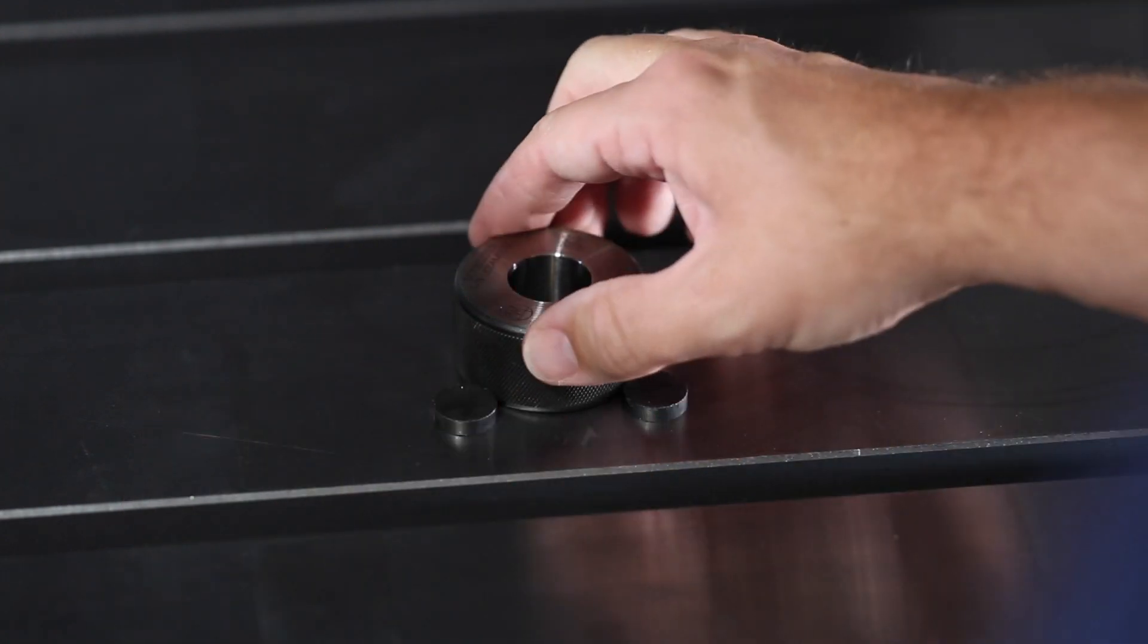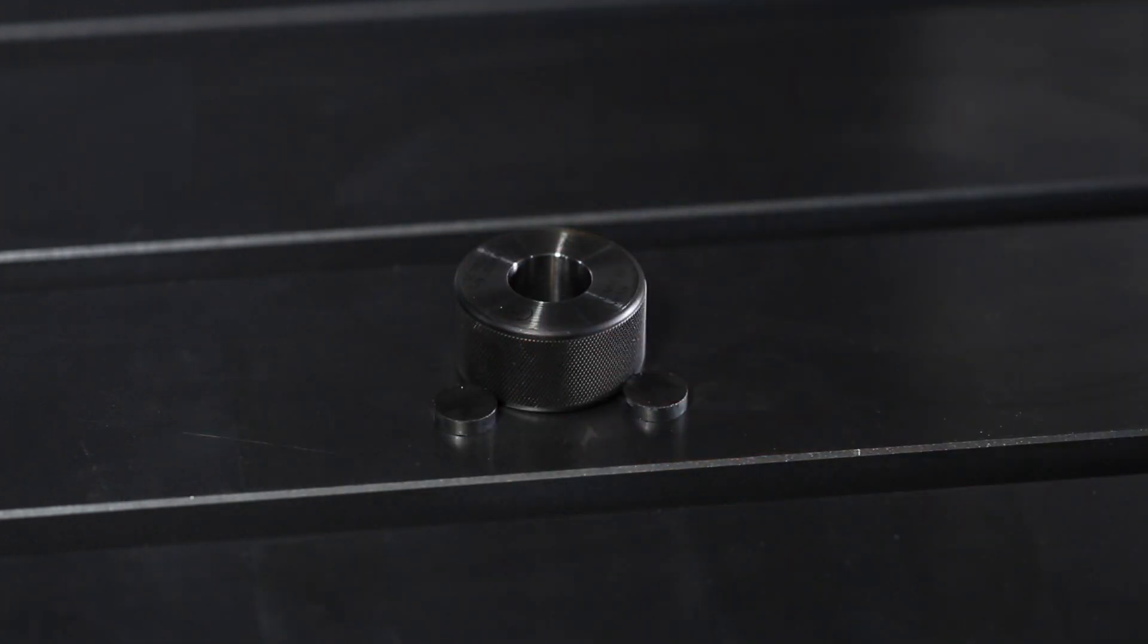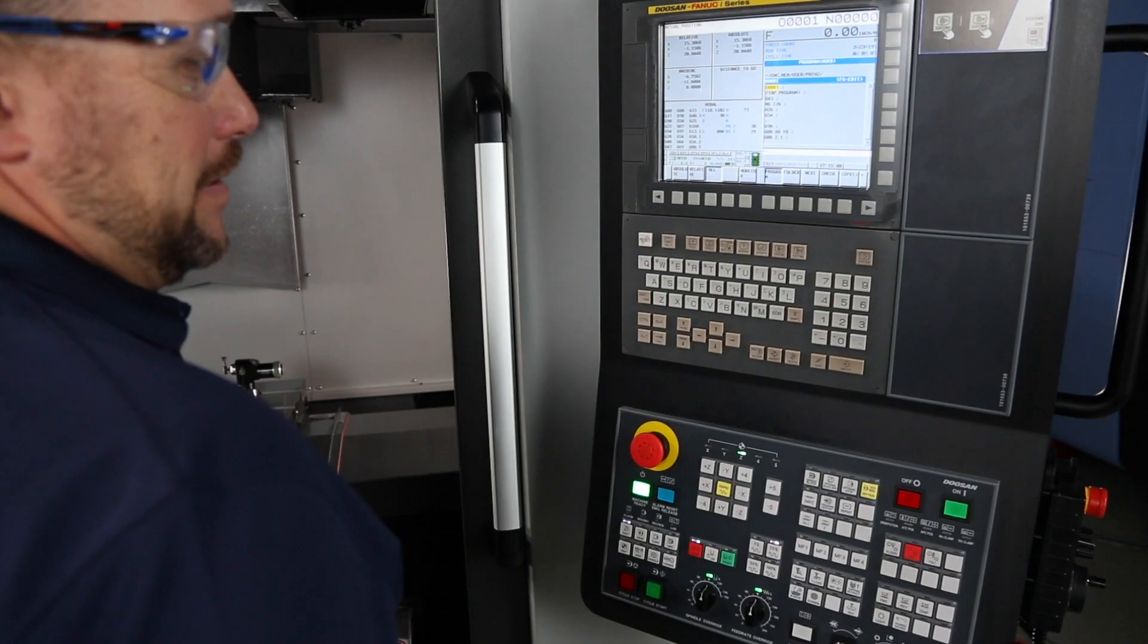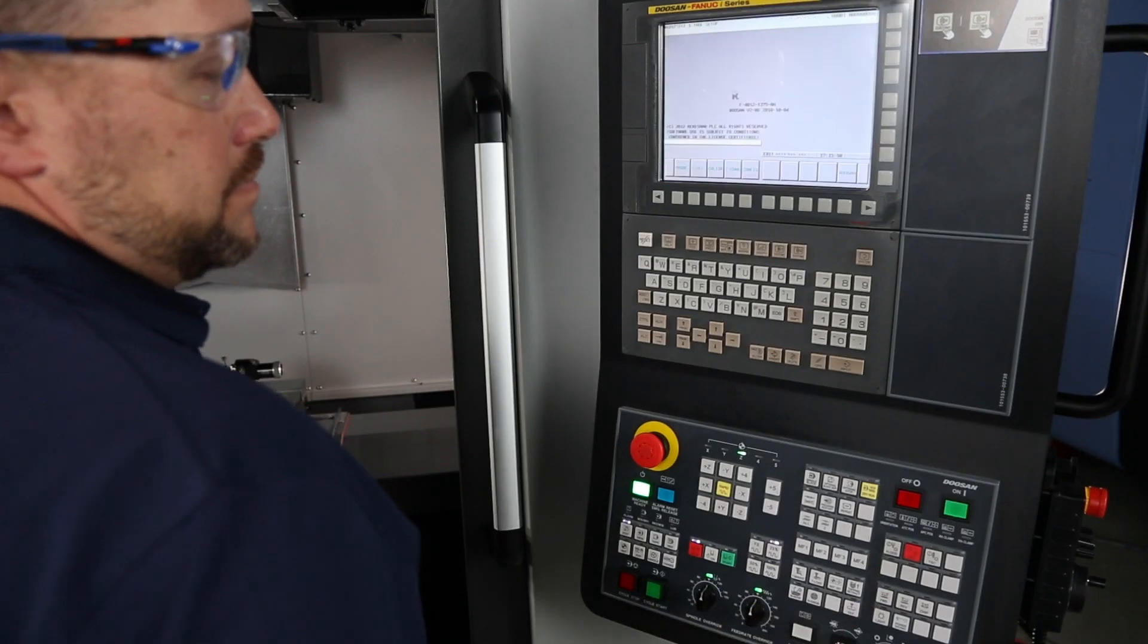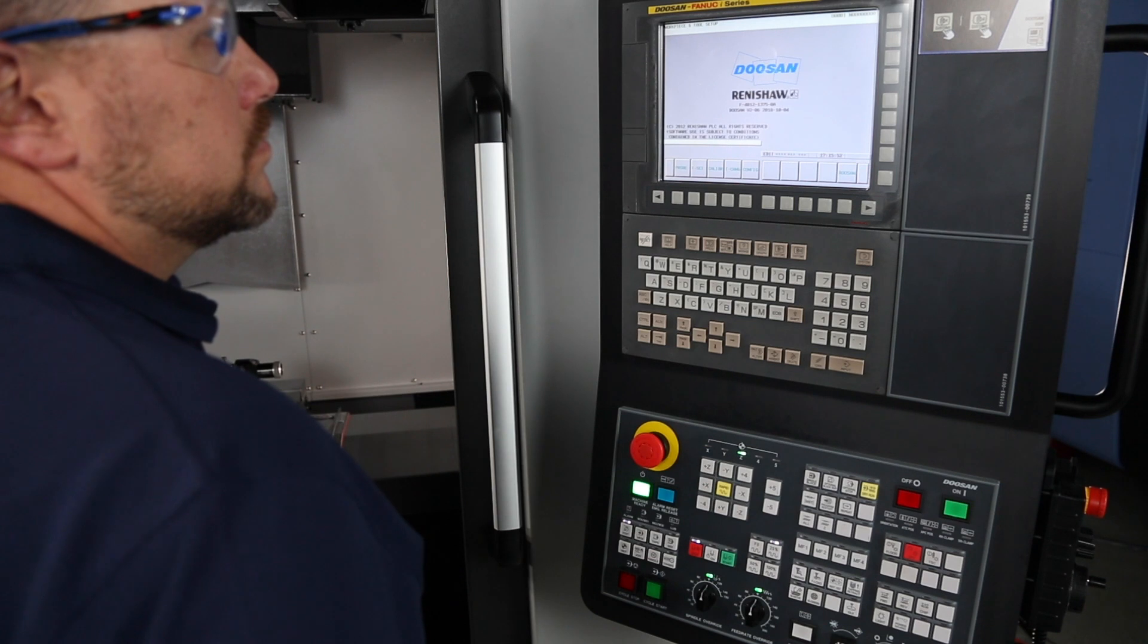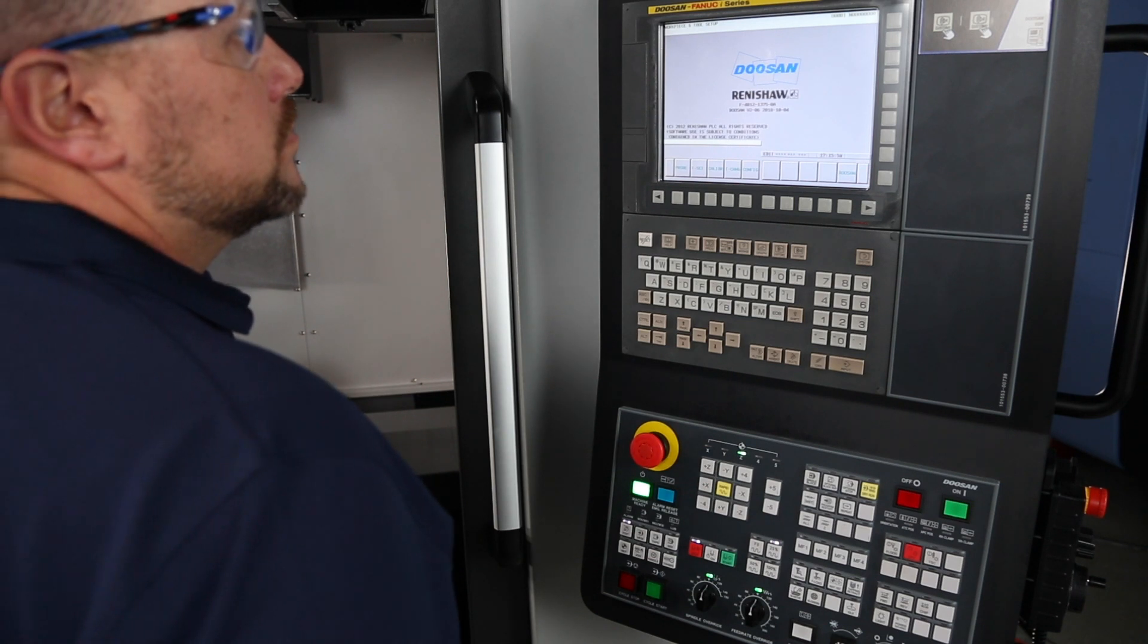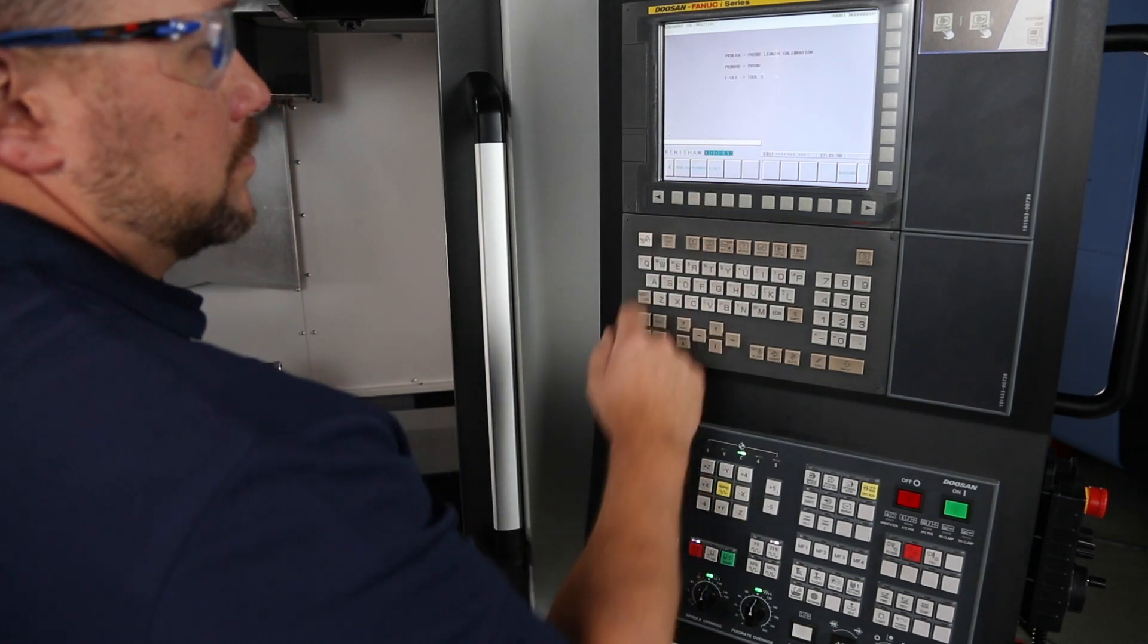Alright, at this point, we're ready to move over to the control and let the GUI software calibrate our probe. I want you to press the GUI hard key and that will take you to the Doosan Renishaw program page. Once you're there on the ring GUI page, I want you to press calibration.